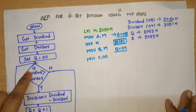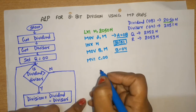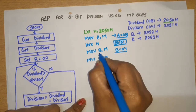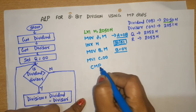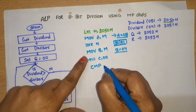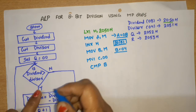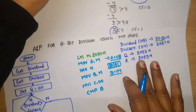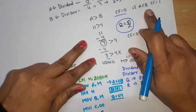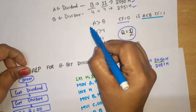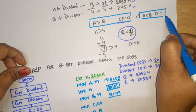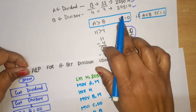Now perform the comparison — is dividend greater than divisor? Dividend is in A, divisor is in B. Write CMP B — this compares the accumulator content with content of B. If carry flag comes, it means our number is smaller and subtraction will not be performed. If carry flag does not come (CF=0), subtraction will be performed. Carry flag comes when A is less than B — this was already discussed.